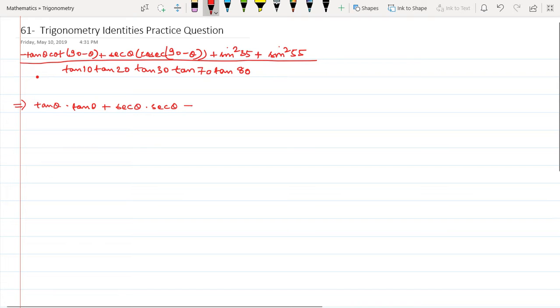Plus I have sine squared 35 plus sine squared 55, which is going to be cos squared 55. So this will become one eventually. So if you see, I've just arranged the terms in the numerator.